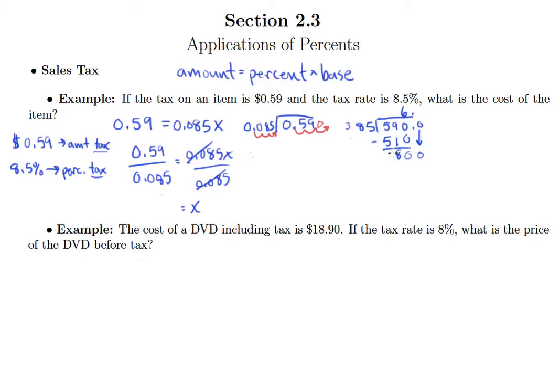I'm doing my division fairly quickly here because I've worked this problem out ahead of time. Your division might not go quite as quickly and that's okay. 85 goes into 800 nine times. 9 times 5 is 45, 9 times 8 is 72 plus 4 is 76.